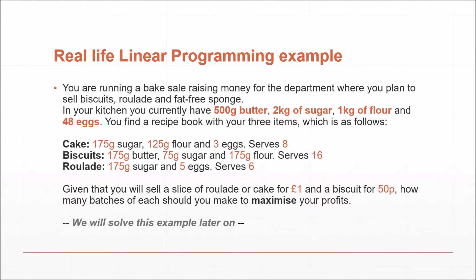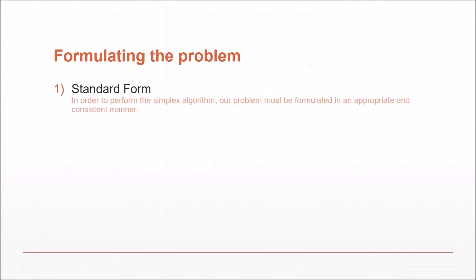This is a real-life linear programming example in which we are trying to maximise profits at a bake sale, given a limited number of ingredients and a variety of different desserts we can bake. We'll look at that example later on.